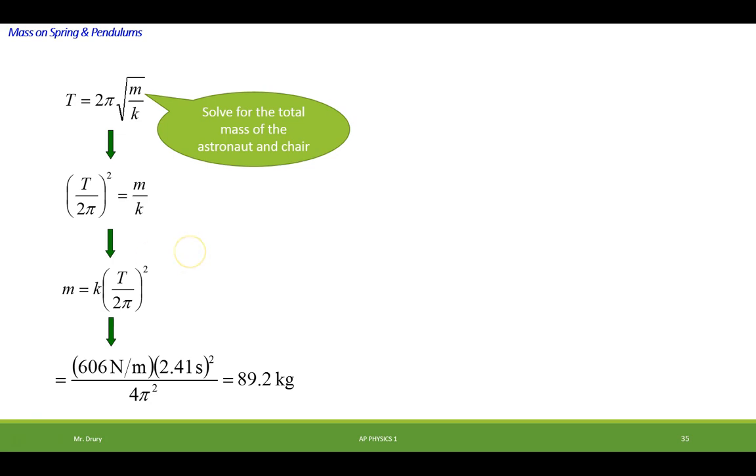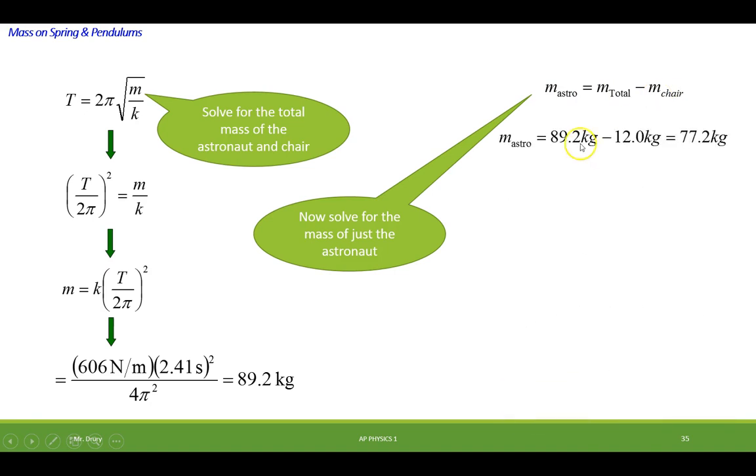But that's not the mass of the astronauts because we need to actually subtract the mass of the chair. So it would be 89.2 kilograms minus the mass of the chair. And here's the mass of the astronaut. So it's kind of neat how they do that. We talked about a lab doing that too.